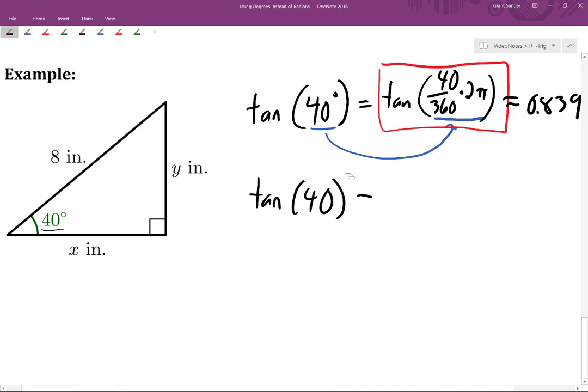tangent of 40, if we're working in radian mode, will actually give us a value of about negative 1.12. We don't expect to have a negative slope for this right triangle.